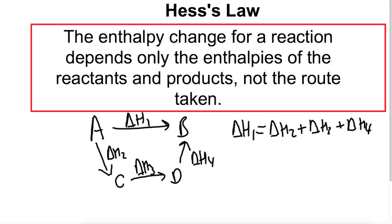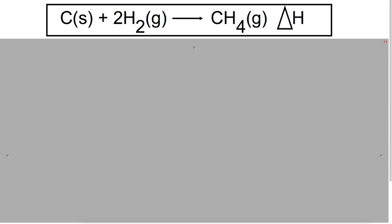We're going to use this today to calculate some enthalpy changes. The first one we're looking at is the enthalpy of formation for methane. The enthalpy of formation is always the enthalpy change associated with making one mole of a substance from its elements in standard states. This isn't always actually possible. So here we have our enthalpy change delta H going from carbon solid plus hydrogen gas to give us methane as a gas.